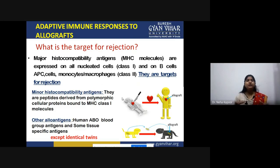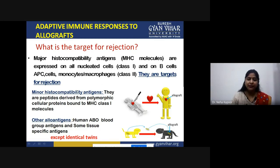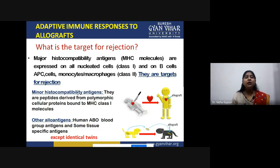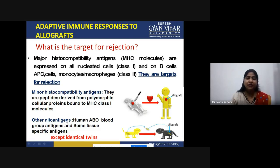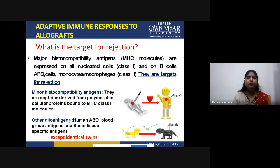In allograft rejection, the adaptive immune response comes into play. The main targets for rejection are: major histocompatibility complex (MHC) class 1 and class 2 antigens; minor histocompatibility antigens, which are peptides derived from polymorphic cellular proteins presented on MHC class 1 — also known as transplantation antigens; and other alloantigens, corresponding to human blood group antigens such as the ABO system, which also act as transplantation antigens and are main targets of rejection.